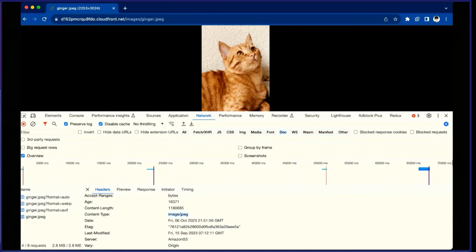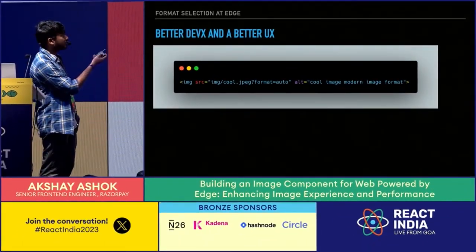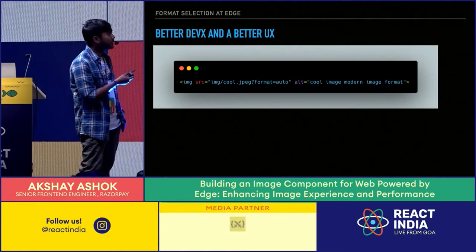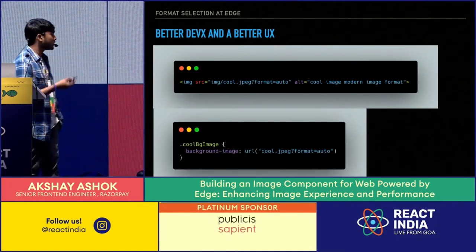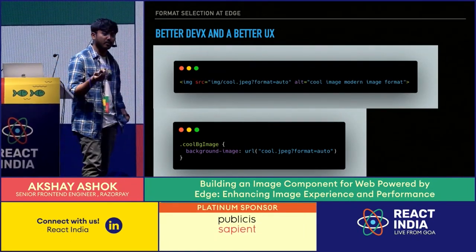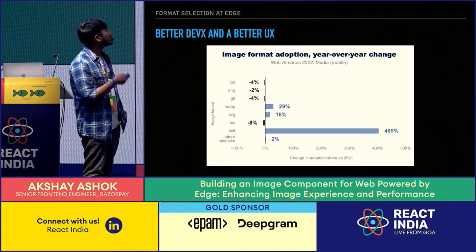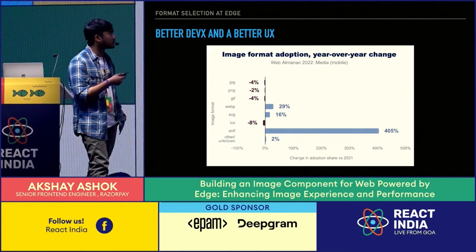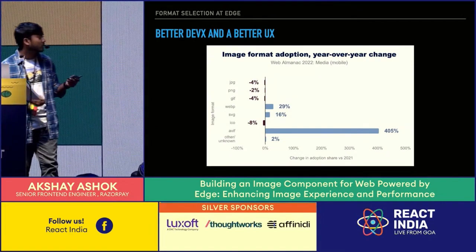Now image usage is as simple as using 'cool.jpeg' with 'format=auto' appended — it will serve modern image formats automatically. The same works for background images with a single CSS line, no need for Modernizr or extra libraries. AVIF adoption has increased significantly, and hopefully simpler tooling will accelerate that further.